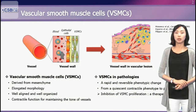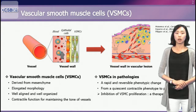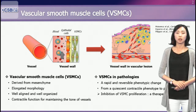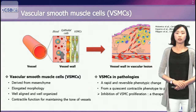Blood vessels arise from the mesenchyme, and mesenchymal cells gradually develop into vascular smooth muscle cells, called VSMCs. VSMCs in native blood vessels have an elongated morphology and are aligned in the circumferential direction with a well-organized structure. The primary role of VSMCs is to maintain the tone of blood vessels and to control blood flow through contraction of resistance arteries. In various vascular pathologies such as atherosclerosis, VSMCs undergo a rapid and reversible change from a contractile phenotype to a proliferative and secretory phenotype characterized by increased proliferation. Thus, excessive proliferation of VSMCs has been a therapeutic target for prevention of atherosclerosis and post-angioplastic restenosis.